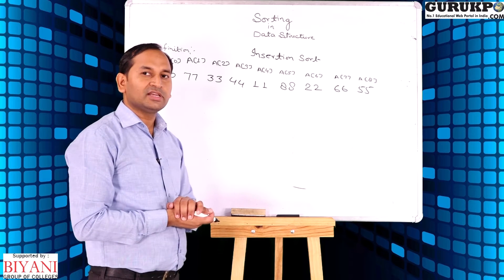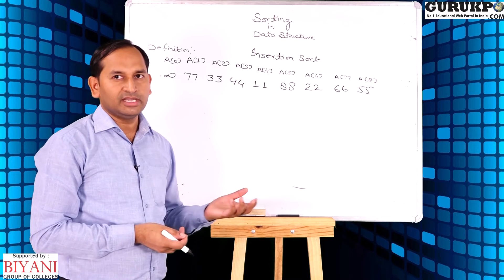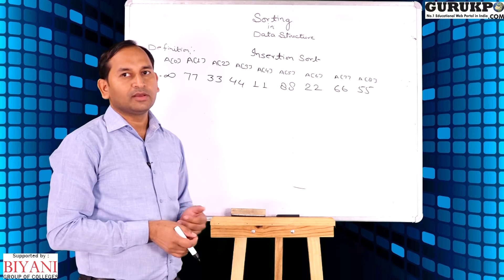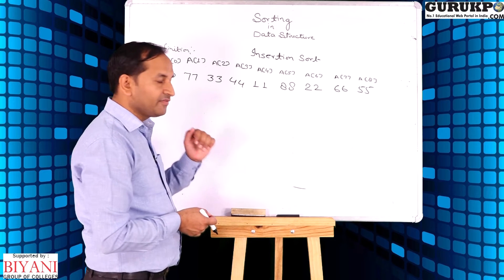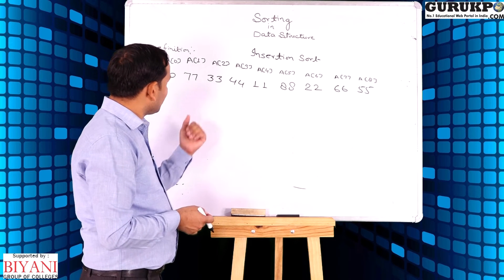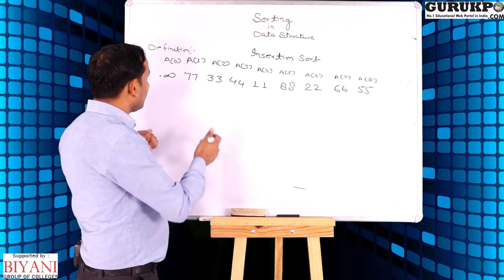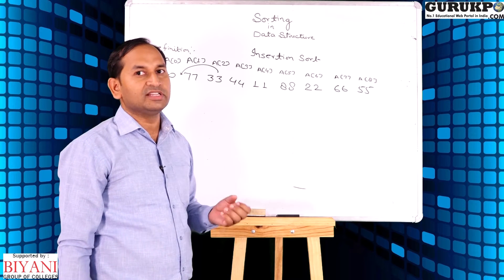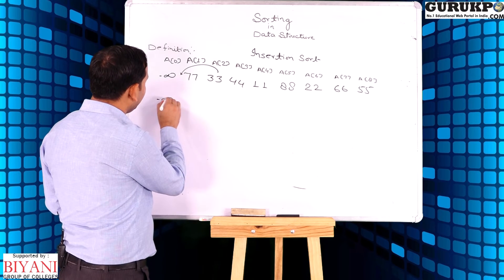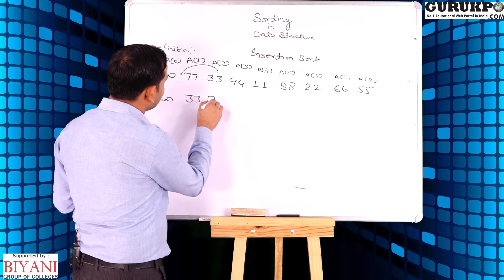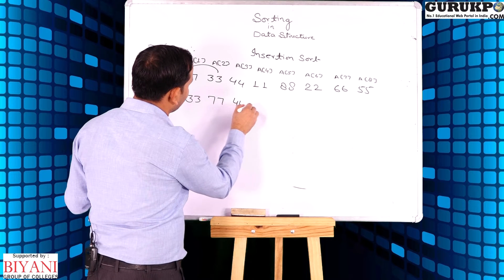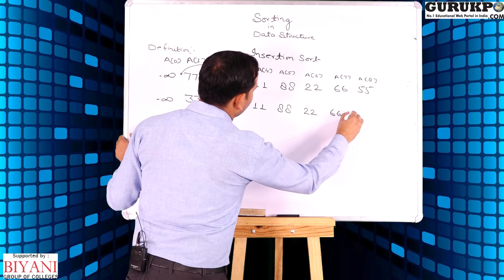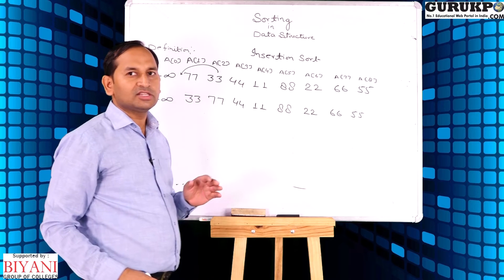For element 77, it is the first element of the given list, so it is already in sorted form. Now for the second element 33, we insert 33 into its proper location. Since 33 is less than 77 but greater than minus infinity, it will be inserted in between. Now the updated list is: 33, 77, 44, 11, 88, 22, 66, 55. We can observe the first two elements are in sorted form.